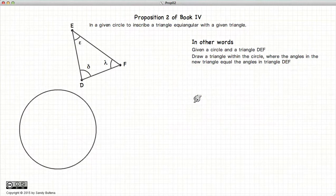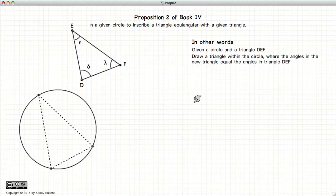This video presentation is going to be on Proposition 2 of Book 4. This proposition gives us the methods required to take any triangle and to create a similar triangle inside another circle. And by similar, I mean that all the angles inside of this triangle will be the same inside of this triangle.